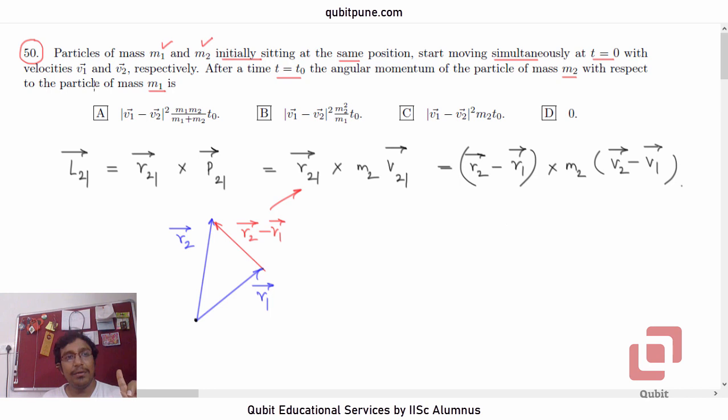Now, let us go to velocities and note that these velocities are constants. V1 bar and v2 bar are constants. They have not said anything about acceleration. So when the velocities are constants, it means that both the motions are rectilinear motions.